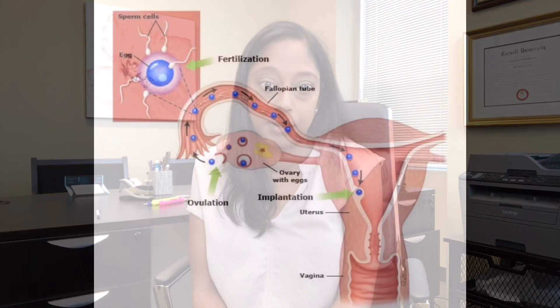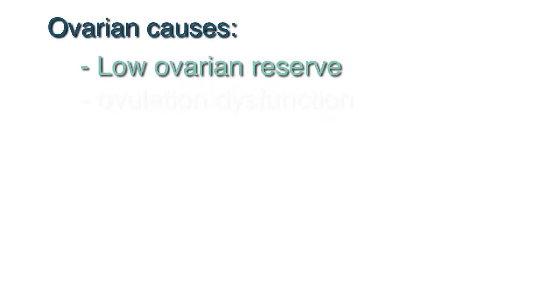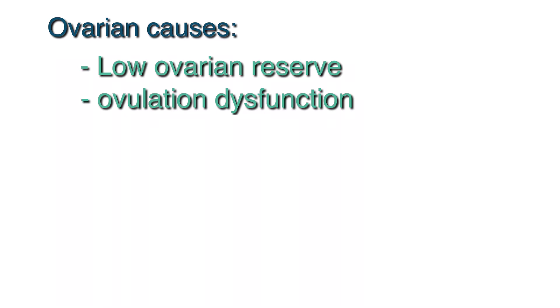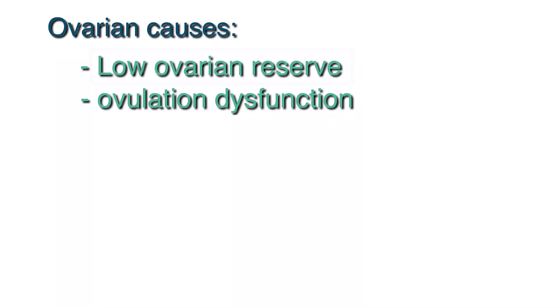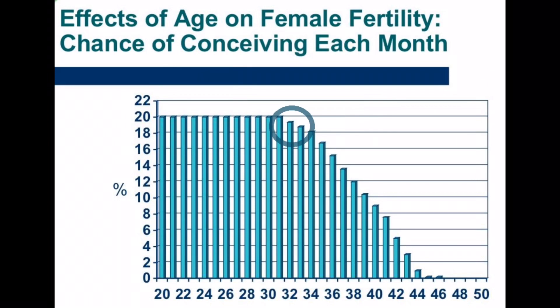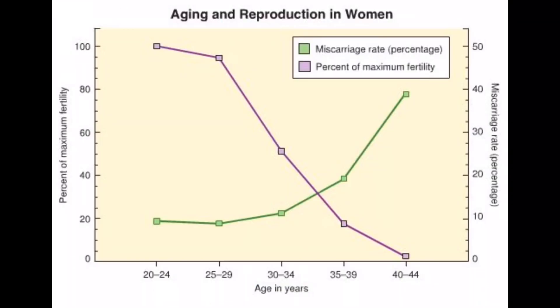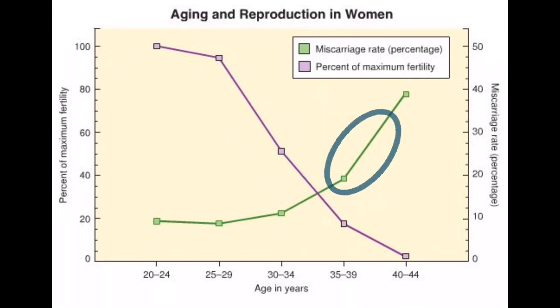There are two main causes of ovarian dysfunction: low ovarian reserve and ovulation dysfunction. Let's look at low ovarian reserve first. Pregnancy rates start to gradually decline at age 32 and more significantly at age 35. This decline in pregnancy rates is associated with an increase in miscarriage rates.